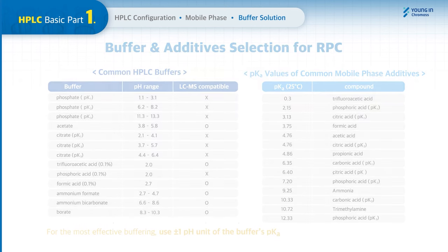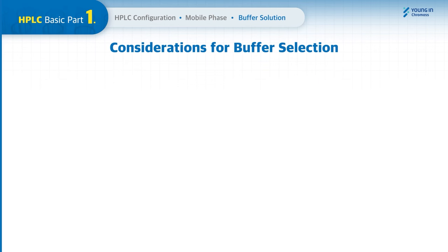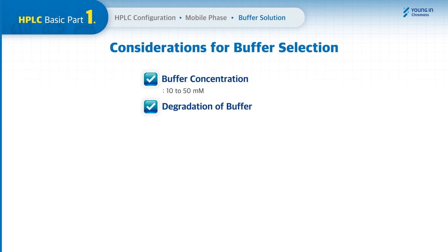Key considerations when selecting buffers: Buffer concentration — increasing buffer concentration leads to faster elution of polar molecules, but higher concentration increases viscosity, resulting in high column back pressure. A concentration range of 10 to 50 millimoles is normally adequate for most applications. Degradation of buffer — some buffers degrade over time and their UV absorbance increases, so mobile phases containing these buffers should be made fresh.